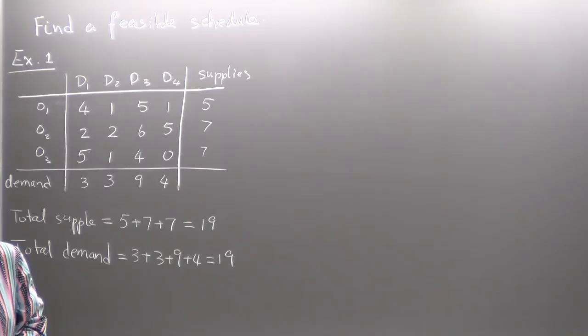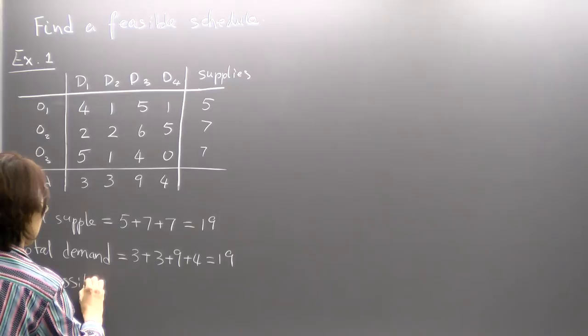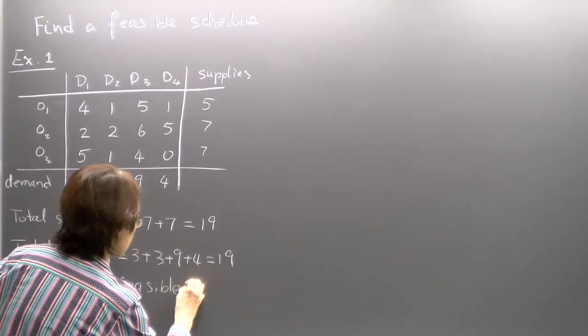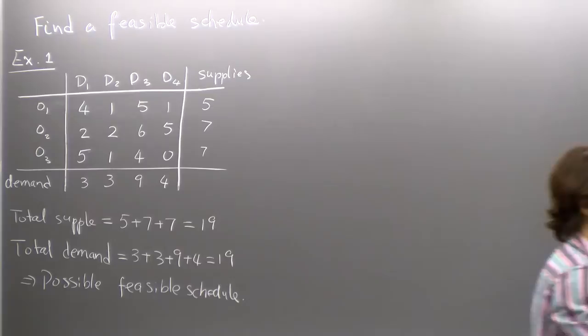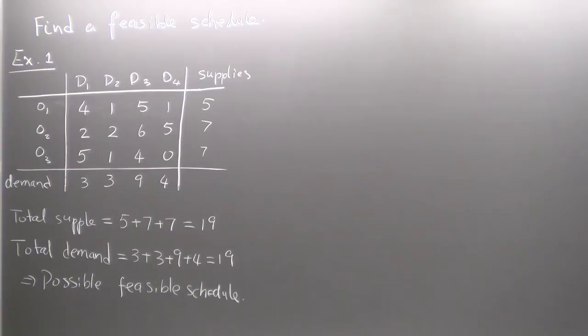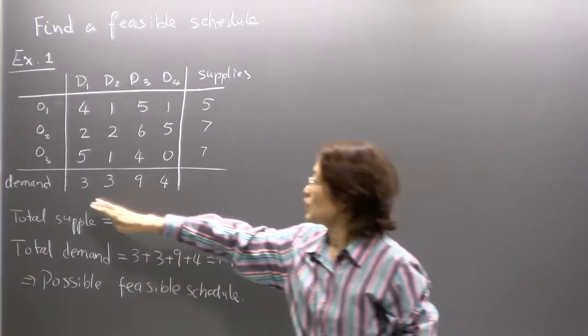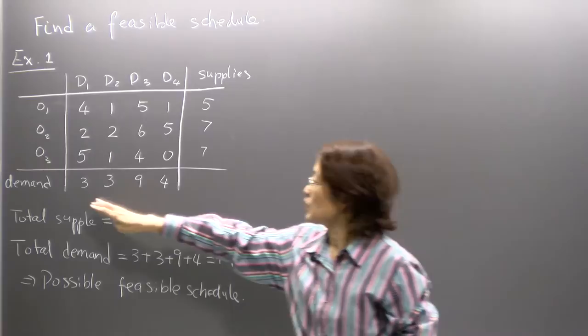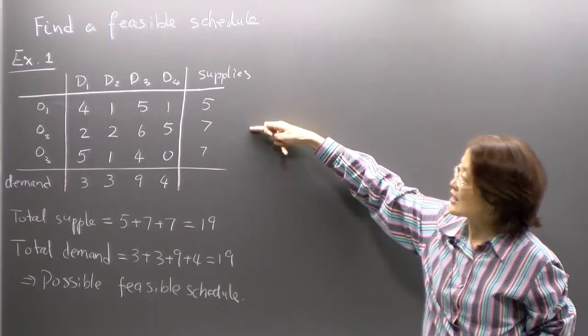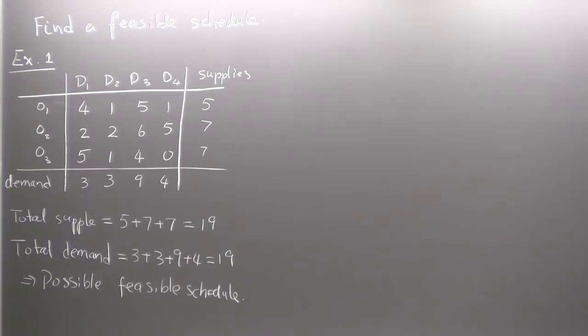When I say feasible schedule, I borrow the term feasible solution — meaning a schedule that satisfies all the constraints. The constraints are: what you ship out of origins cannot exceed supply, and what you ship to the location cannot be less than the demand. Here we have them exactly equal, meaning what you ship out will exactly be these three numbers, and what the destination receives will be exactly what it's demanding.